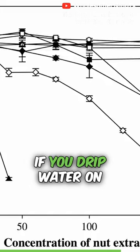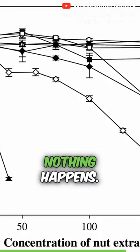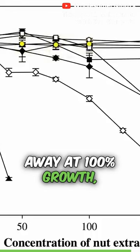If you drip water on these cancer cells as a control, nothing happens. They start out powering away at 100% growth, and they keep powering away at 100% growth.